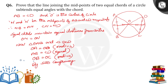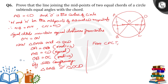Triangle OAB is congruent to triangle OCD. When these two triangles are congruent, from CPCT, angle AOB is equal to angle COD. Hence proved: the line segment joining the midpoints of two equal chords of a circle subtends equal angles with the chords.